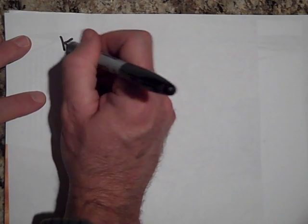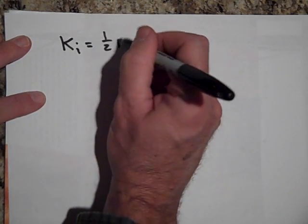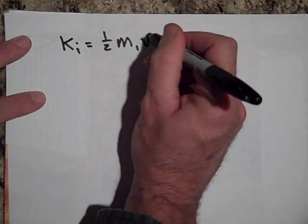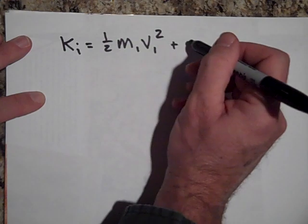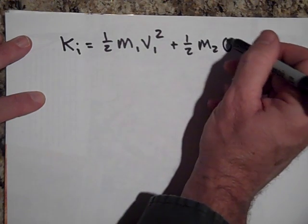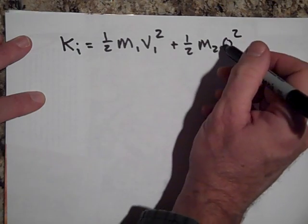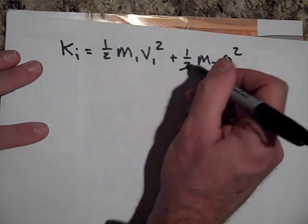So the energy at the beginning was, K initial was one-half m1 v1 squared plus one-half m2 zero squared. Since the initial velocity of v2 was zero, so that gives me, that cancels, so that's the total energy at the beginning.